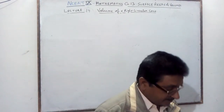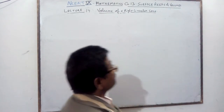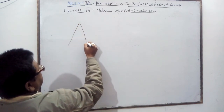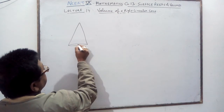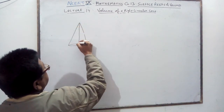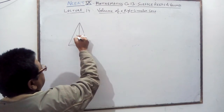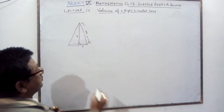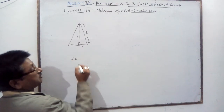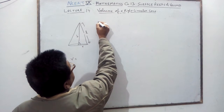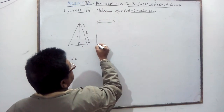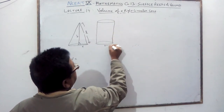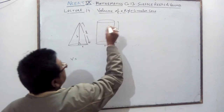Hello students, you are studying the volume of a right circular cone. A right circular cone has a radius and height making 90 degrees. The slant height is what we called it in surface area. The volume of a cone is related to the volume of a cylinder with the same radius and same height.